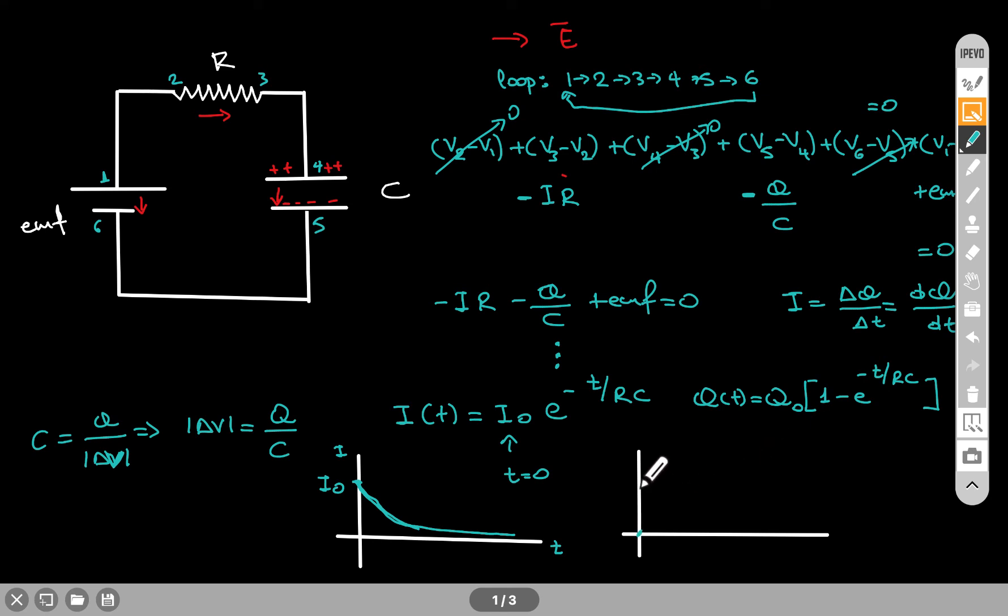And at the beginning, the charge on the capacitor is zero. So what this function shows me is that the charge on the capacitor increases exponentially. And this is here the value of q0. If you wait long enough, effectively, the charge on the capacitor will be q0.